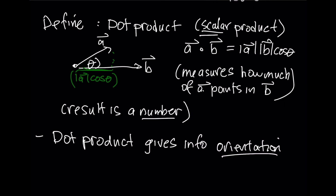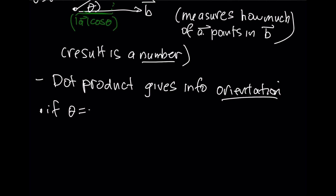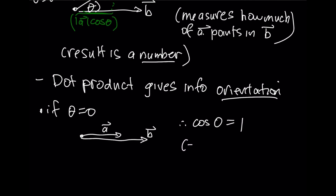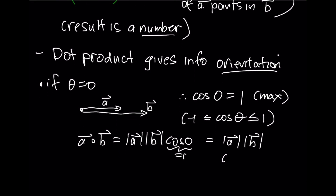The angle between two vectors can only ever be between zero and pi. If the angle is zero, you have two vectors pointing in exactly the same direction. The cosine of zero equals one, and since cosine can only be between negative one and one, this is the maximum possible value. In that case, the dot product is just the length of A times the length of B — that simple definition of work we talked about. This is the maximum possible value, and we say the vectors are parallel.